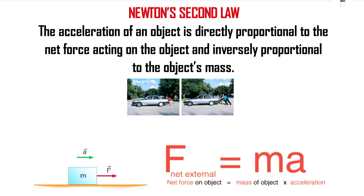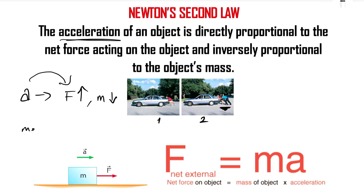Now we will talk about Newton's second law of motion. The second law says: the acceleration of an object is directly proportional to the force and inversely proportional to the mass. According to the previous pictures, in the second picture we have more force, so the car moves faster — meaning more acceleration. So more force means more acceleration.